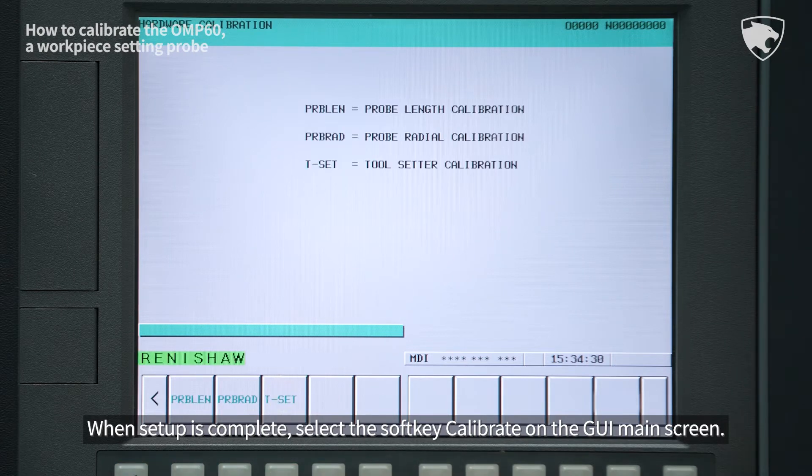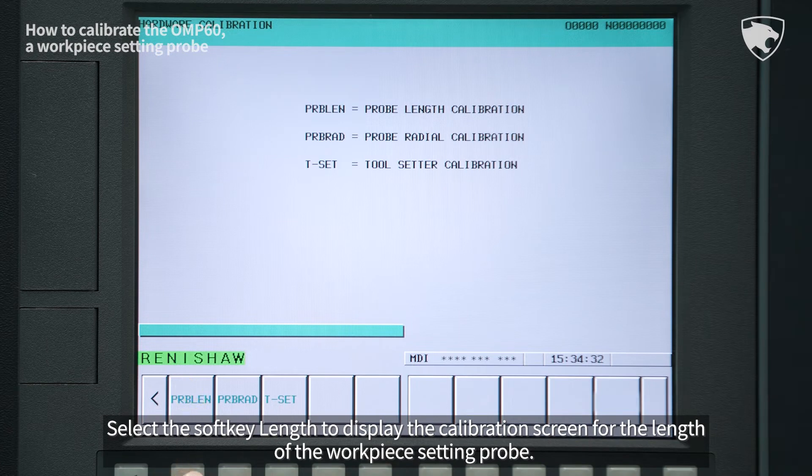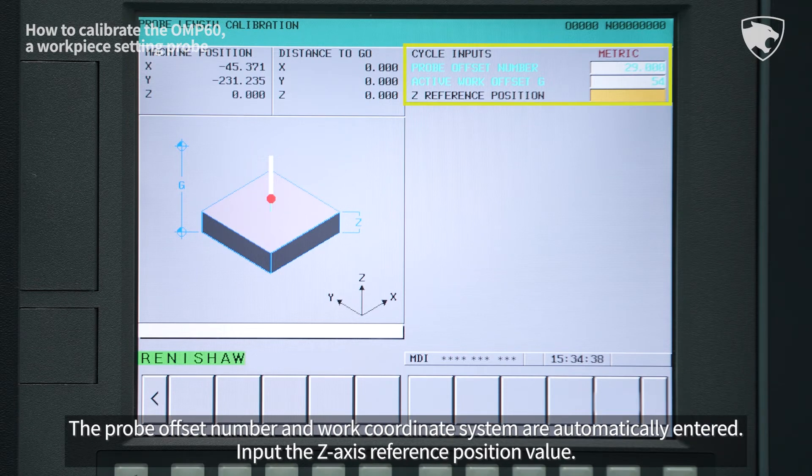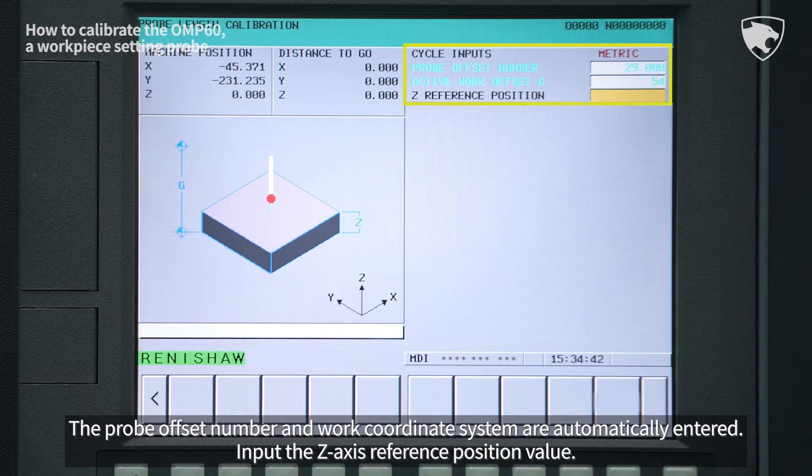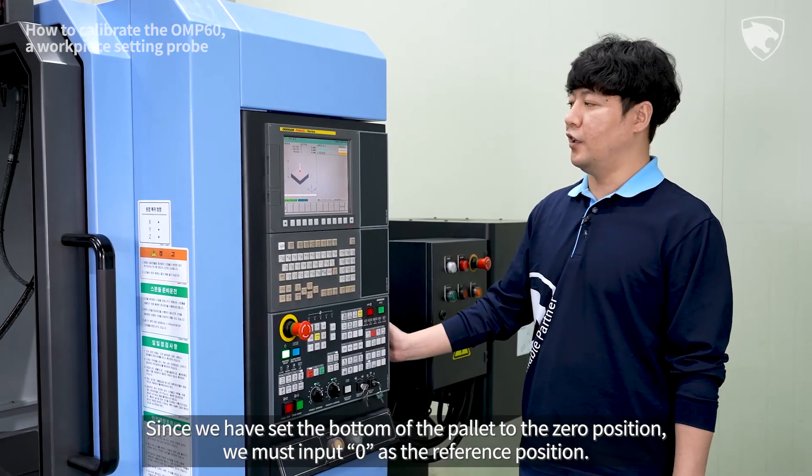When setup is complete, select the soft key calibrate on the GUI main screen. Select the soft key length to display the calibration screen for the length of the workpiece setting probe. The probe offset number and work coordinate system are automatically entered. Input the z-axis reference position value. Since we have set the bottom of the palette to the 0 position, we must input 0 as the reference position.